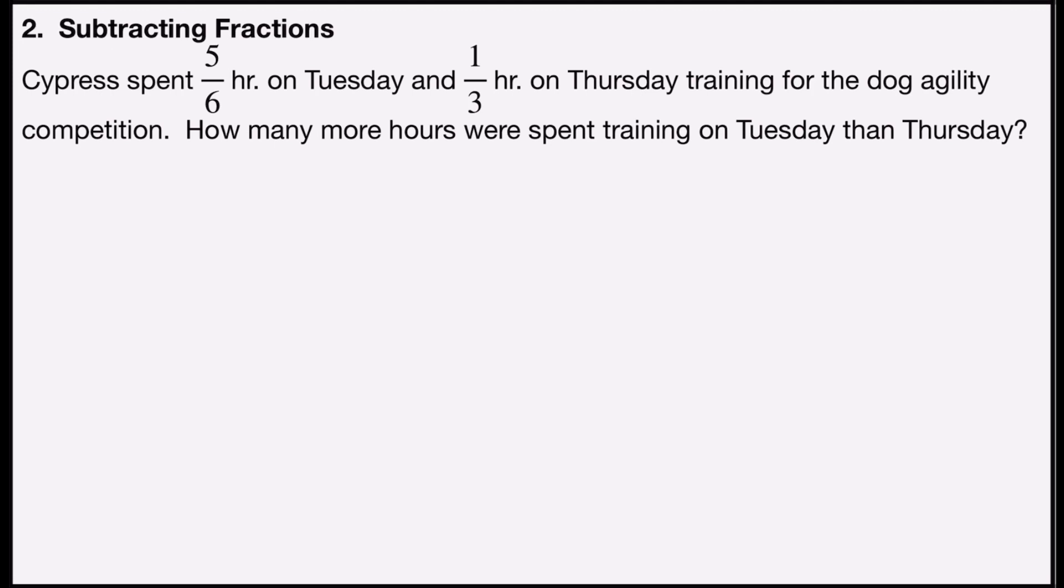So I'm going to subtract 5/6 minus 1/3. Since six is a multiple of three, I know my least common denominator is going to be six. If I have two numbers and they're multiples of one another, you pick the higher multiple and that will always be your least common denominator.